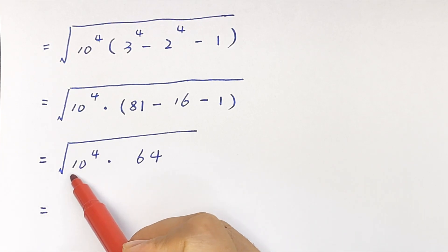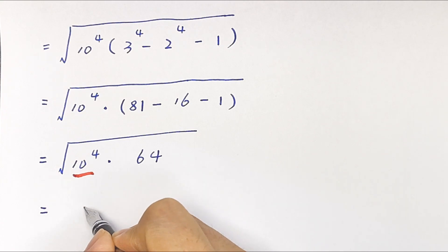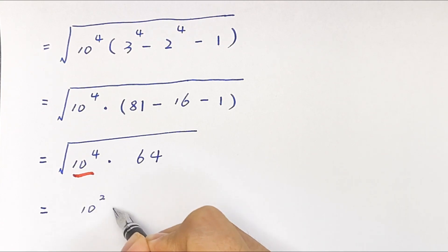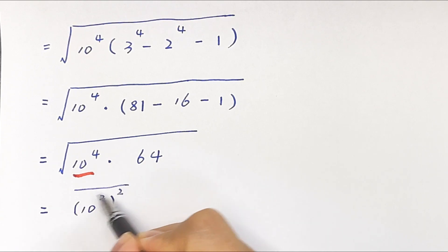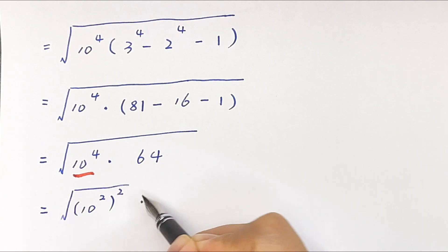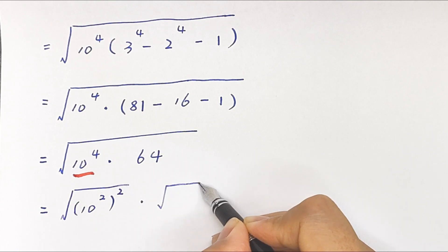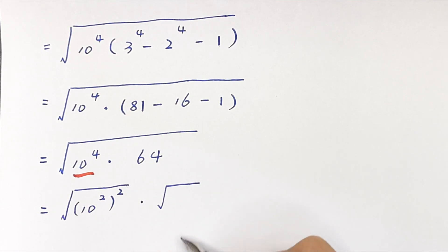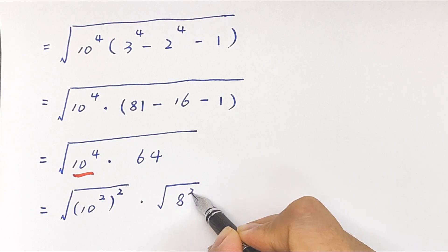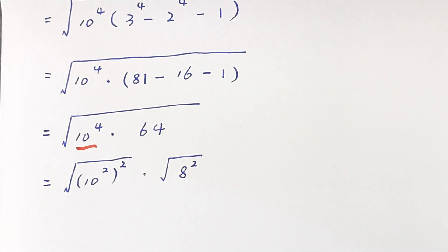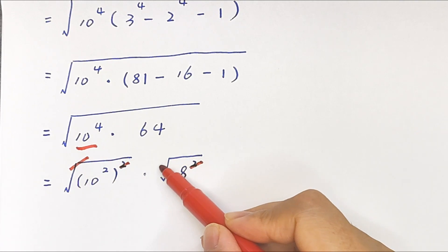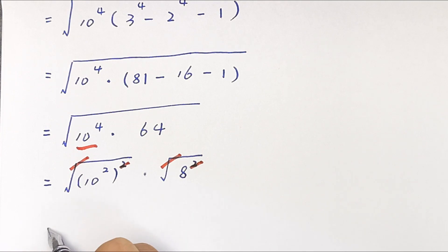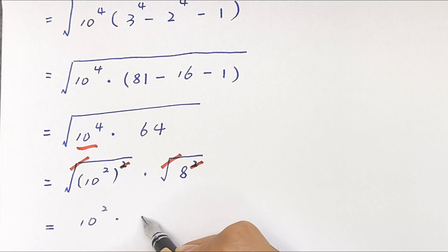10 to the power of 4 is the same as 10 squared, to the power of 2, and 64 is the same as 8 squared. The square roots cancel, giving us 10 squared times 8.